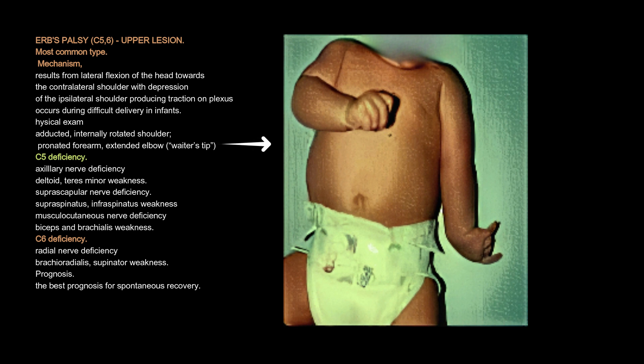Erb's palsy (C5-6), the most common type and an upper lesion, results from lateral flexion of the head toward the contralateral shoulder with depression of the ipsilateral shoulder, producing traction on the plexus during difficult delivery. Physical exam shows adducted, internally rotated shoulder, pronated forearm, extended elbow — the classic 'waiter's tip' posture. C5 deficiency involves axillary nerve deficiency (deltoid, teres minor weakness) and suprascapular nerve deficiency (supraspinatus, infraspinatus weakness), and musculocutaneous nerve deficiency (biceps and brachialis weakness). C6 deficiency involves radial nerve deficiency (brachioradialis, supinator weakness). Erb's palsy has the best prognosis for spontaneous recovery.